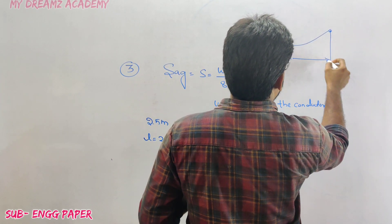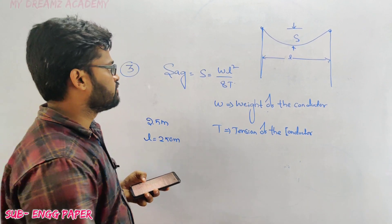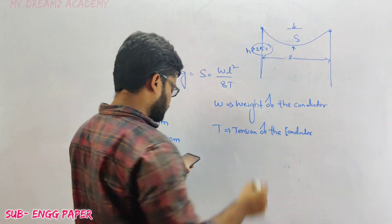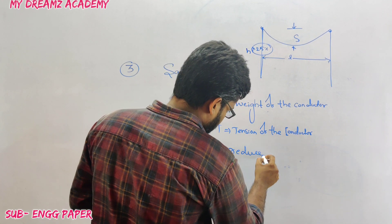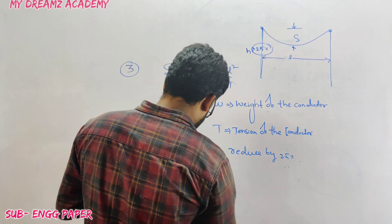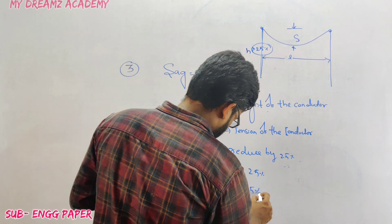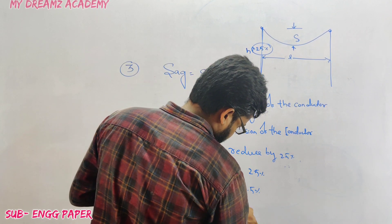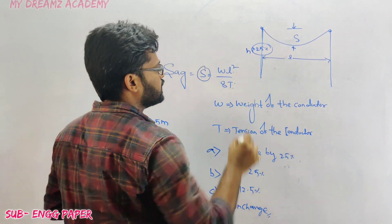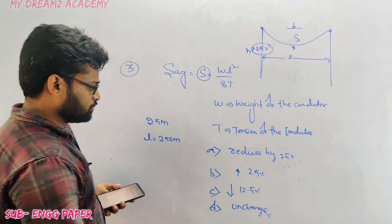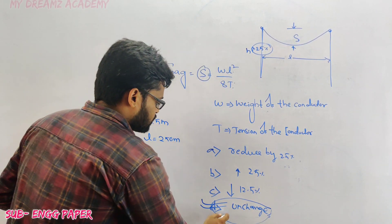Now the height of the supporting towers is increased by 25 percent. The options are: reduced by 25%, increased by 25%, reduced by 12.5%, or remains unchanged. The sag of the conductor does not depend on the height of the conductor, so it remains unchanged when the height is increased by 25 percent.